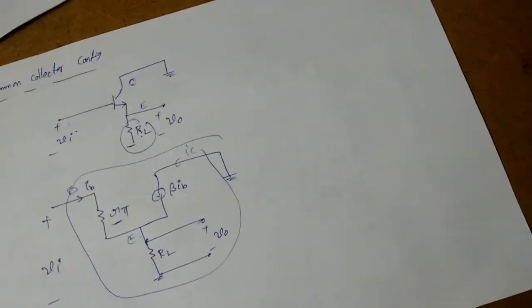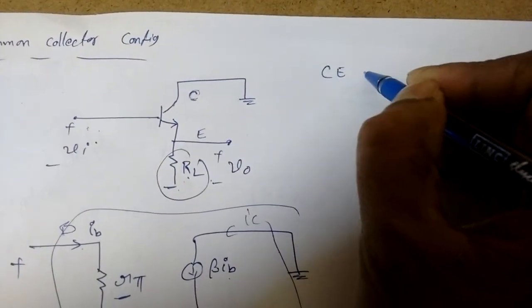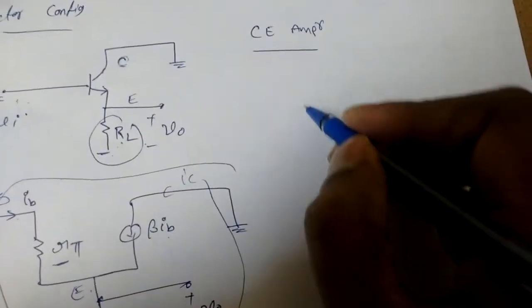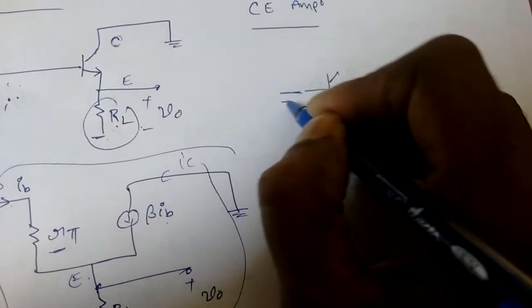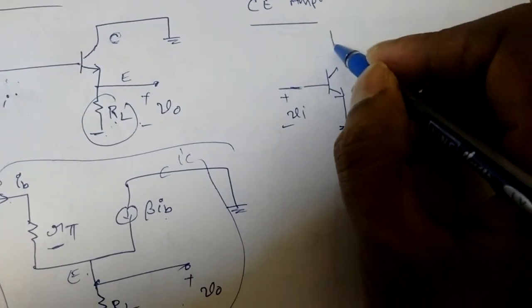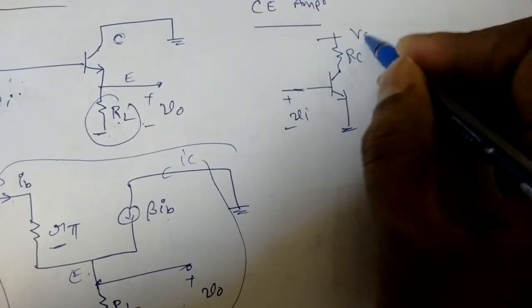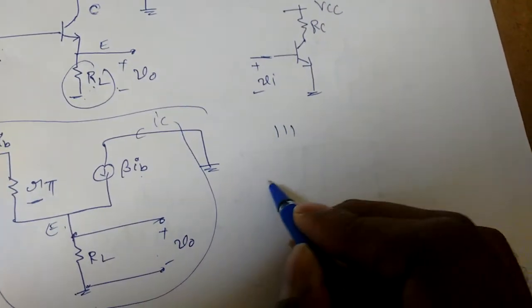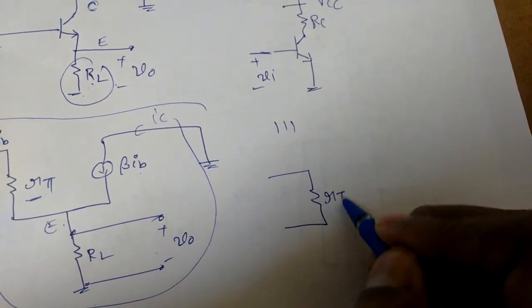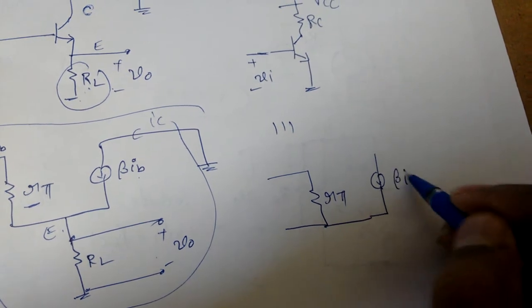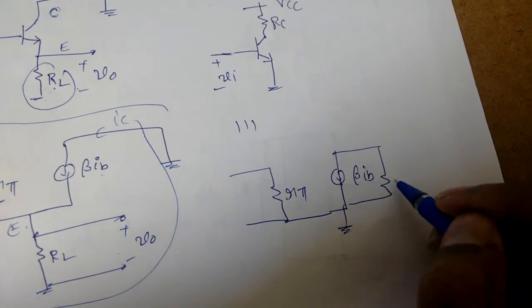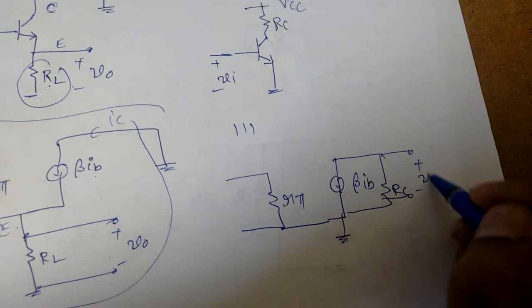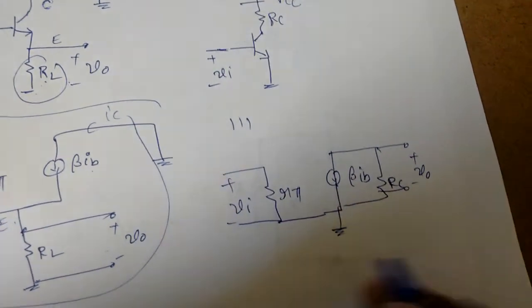Now we will see configurations one by one — input impedance, output impedance, etc. First is the common emitter configuration. In a simple common emitter amplifier, the emitter is grounded, input is given to the base, and r_c is connected to V_cc. The equivalent small signal model has r_pi at the input side and a dependent current source beta times i_b at the output side, with r_c — neglecting the Early effect.